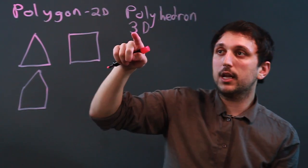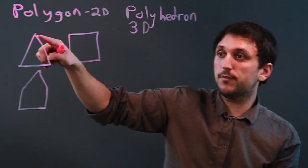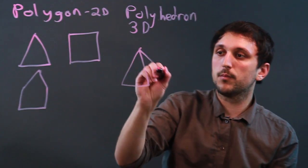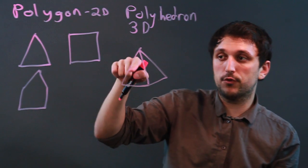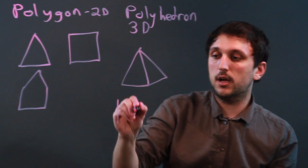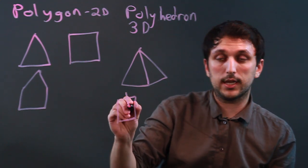So the faces are made up of polygons. We could have a pyramid, which is a bunch of pyramids connected to make a three-dimensional shape, or we could have a rectangular solid like a cube.